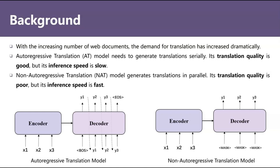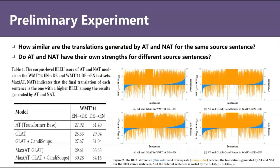Therefore, in this paper, our goal is combining these two modes to build a better translation system. While existing works show that NAT performs worse than AT, this is a corpus-level comparison. From a more fine-grained perspective, we still have two questions. First, how similar are the translations generated by AT and NAT for the same source sentence? Second, do AT and NAT have their own strengths for different source sentences? Therefore, we conduct an experiment to compare AT and NAT modes at the sentence level.